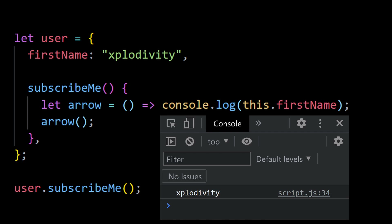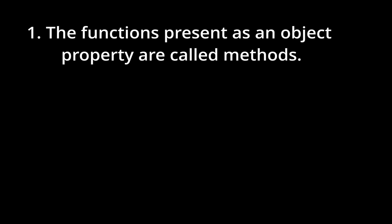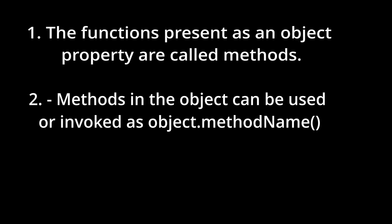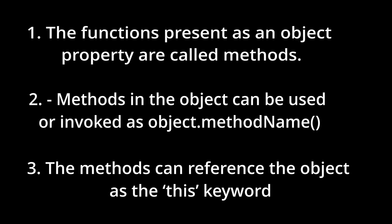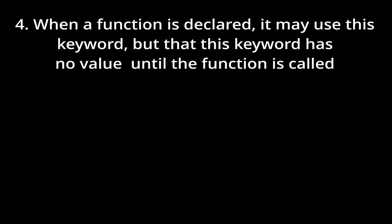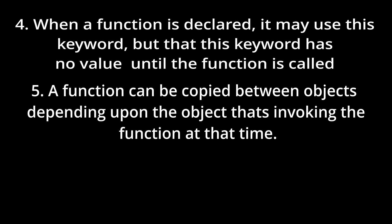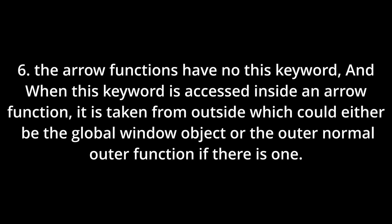To summarize: (1) Functions as object properties are called methods. (2) Methods are invoked as object.methodName(). (3) Methods can reference the object using 'this'. (4) When a function is declared it may use 'this', but 'this' has no value until the function is called. (5) A function can be copied between objects, and 'this' depends on which object invokes it. (6) Arrow functions have no 'this' — they inherit it from outside, either the global window or an outer normal function.